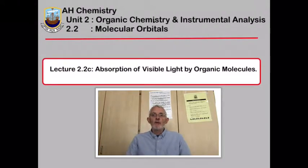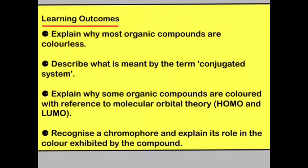In this lecture we're going to look at the colour of organic molecules. By the end of this lecture you should be able to explain why most organic compounds are colourless, describe what is meant by the term conjugated system, explain why some organic compounds are coloured with reference to molecular orbital theory, and recognise a chromophore and explain its role in the colour exhibited by the compound.